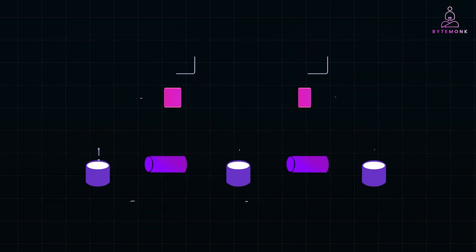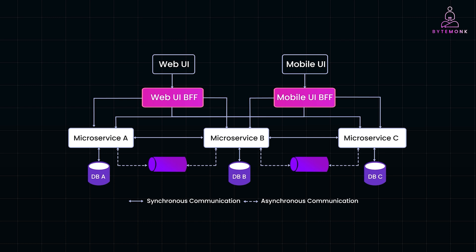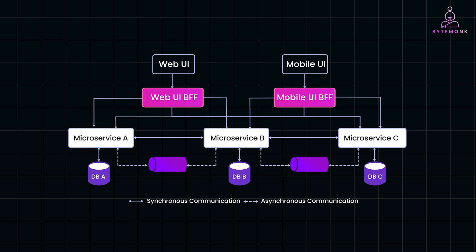The BFF pattern is a powerful strategy for optimizing your microservices architecture, especially when dealing with multiple client types. By providing each client with a tailored backend service, you can streamline data delivery, simplify front-end development, and create a more responsive and maintainable system. Whether you are building an e-commerce platform, a streaming service, or any other application with diverse clients, the BFF pattern can help you deliver a better user experience.